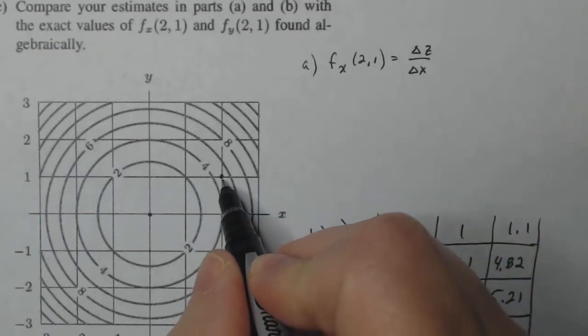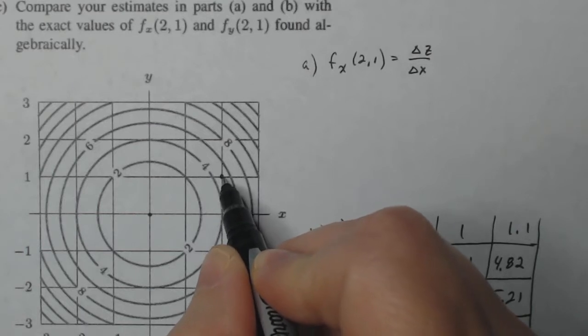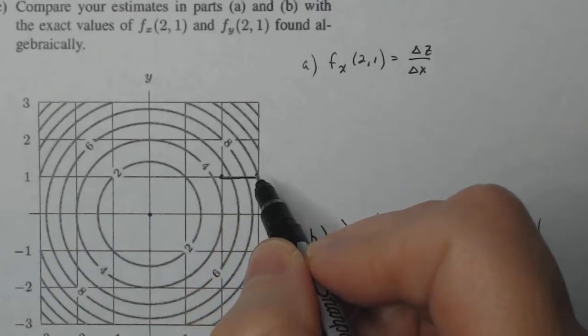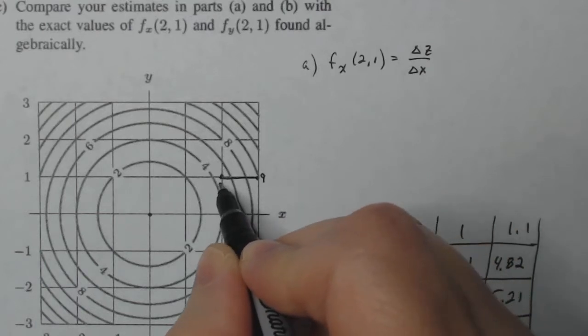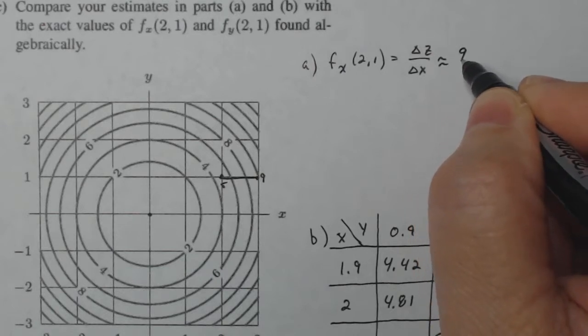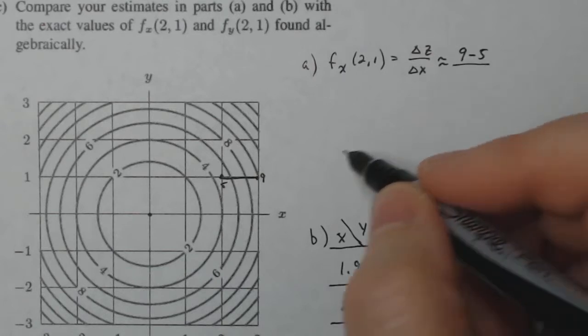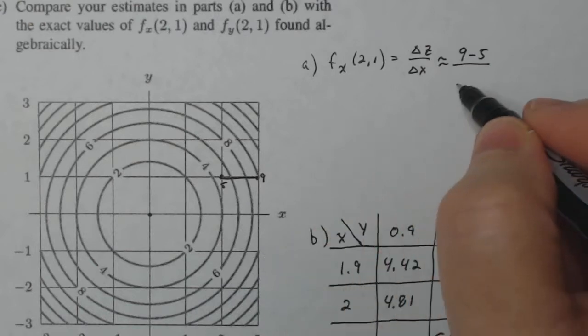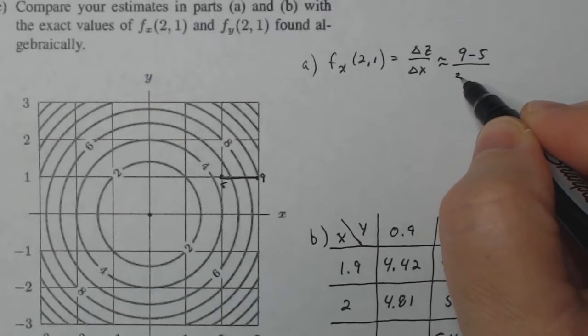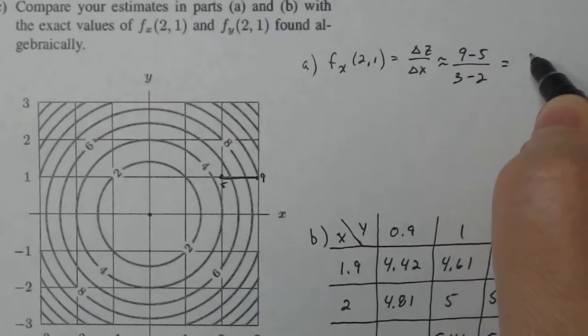So my Z value's going from five, and if I move, I'm just going to move a whole here, a whole X unit. I go from five to looks like nine. All right, so this is the contour at nine, this is my contour approximately five. So my change in Z is about nine minus five, and then my change in X is going to be three, which is this outside one, minus two. So I'm getting my estimate to be four over one, which is four.